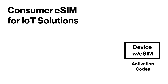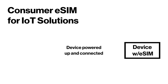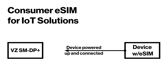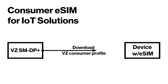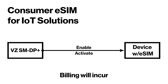Once the activation codes have been downloaded to the device, the device simply needs to be powered up with internet connectivity. It will reach out to the Verizon SMDP Plus to download the Verizon profile to the eSIM and automatically enable and activate the device. It is at this point that billing is started and the device can perform its IoT use cases.